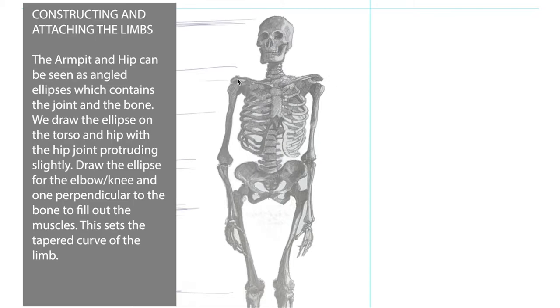So now we're going to look at how we can attach the limbs to the rest of the body. We're just going to mark out where the torso is on this underlying skeleton structure so we can actually be clearly see what I'm talking about.